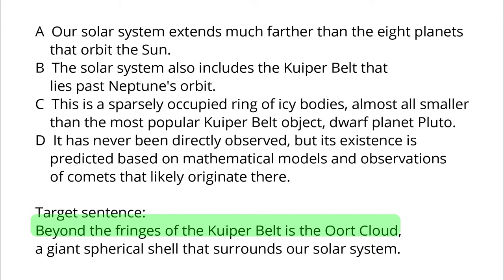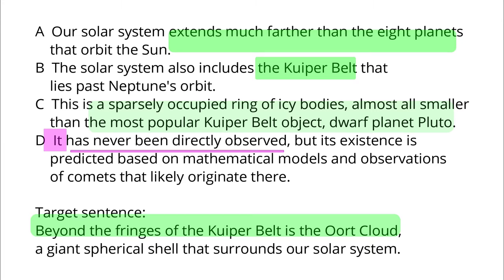A says that our solar system stretches beyond the eight planets. B introduces the Kuiper belt, which lies past Neptune. C talks about specifics of the Kuiper belt. D says that something has never been observed, but must exist due to mathematical calculation.